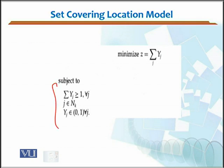The constraint is about the assignment. The first constraint is that the sum of yj's should be greater than or equal to 1 for all j's. What does it mean? y cannot be less than 1.